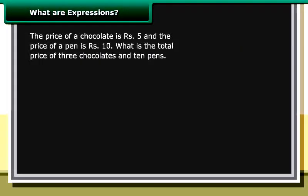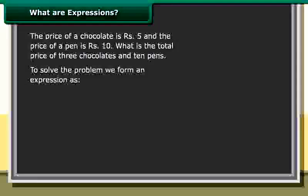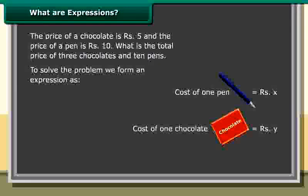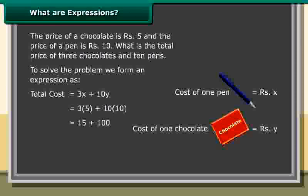What are expressions? The price of a chocolate is rupees 5, and the price of a pen is rupees 10. What is the total price of 3 chocolates and 10 pens? To solve this problem, we form an expression: cost of one pen equals rupees x, cost of one chocolate equals rupees y, cost of three chocolates equals 3y, cost of ten pens equals 10x. Total cost equals 3x plus 10y, which equals 3 × 5 plus 10 × 10, which equals 15 plus 100, which equals 115.